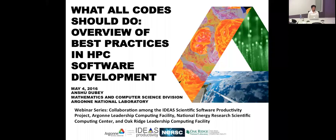I would like to introduce our speaker, Anshu Dube. Anshu Dube is currently a member of the mathematics and computer science department here at Argonne, where she joined as a computer scientist. She spent 12 years at the University of Chicago in the astronomy and astrophysics department as lead application developer, then computer science applications group leader and associate director of the Flash project, which was responsible for developing a large community code called Flash. She has also done substantial work on software architecture and patterns within scientific codes and in adaptive mesh refinement. She'll be speaking to us today about key best practices for what scientific software should do.